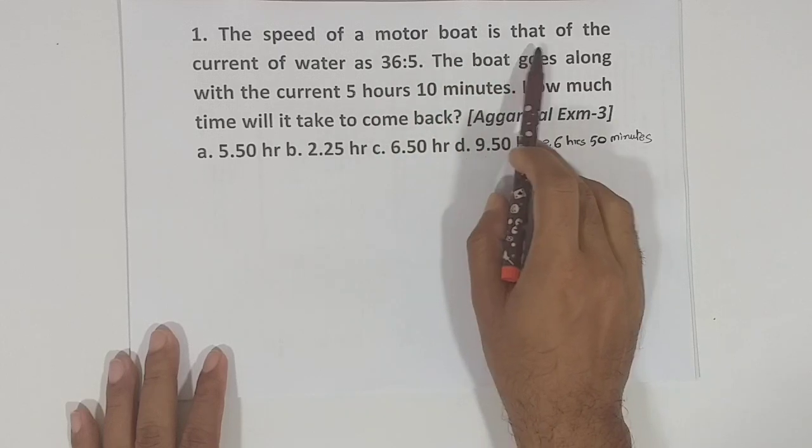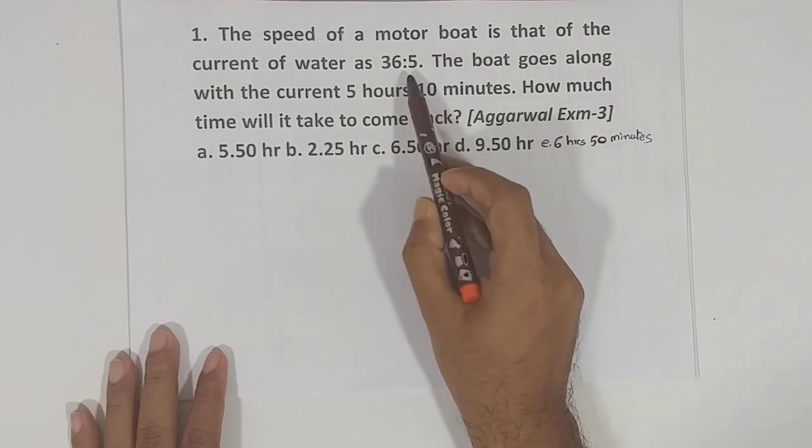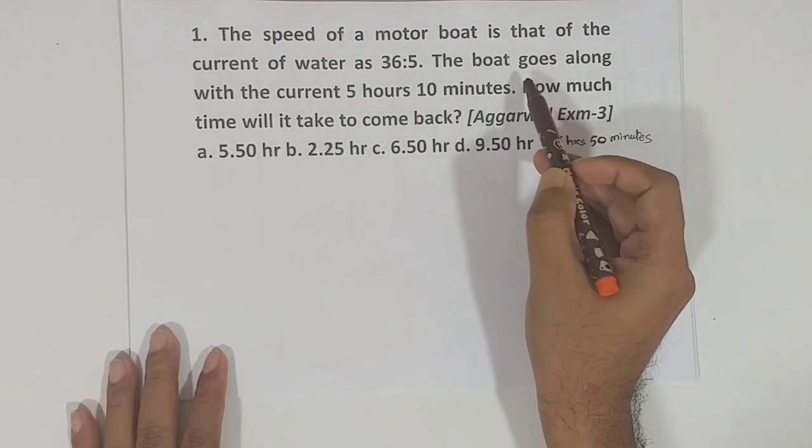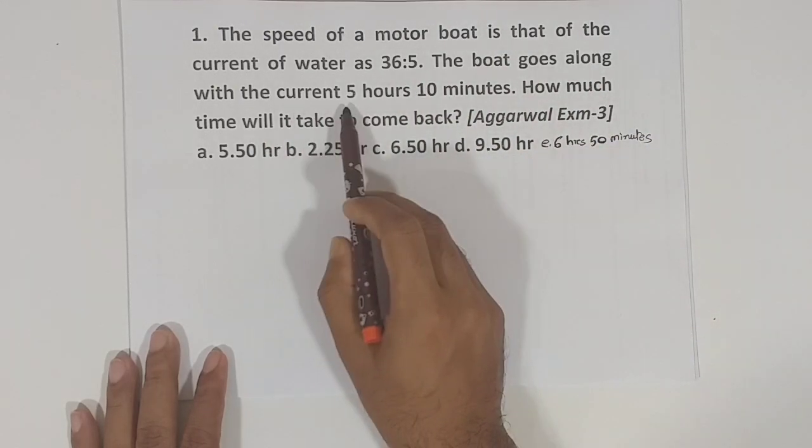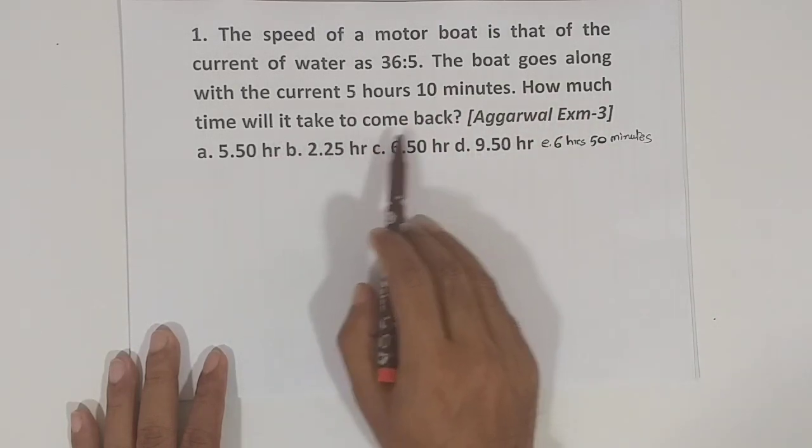The speed of a motor boat is that of the current of water as 36 ratio 5. The boat goes along with the current 5 hours 10 minutes. How much time will it take to come back?